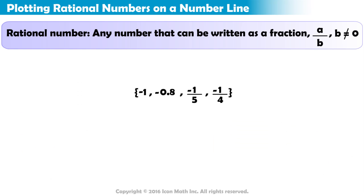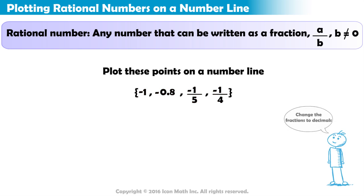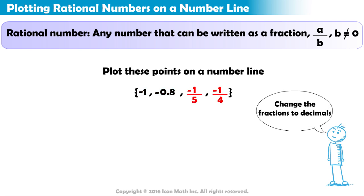Take a look at this set of rational numbers. In order to plot these points on a number line, it is helpful to write them in a common form. Let's change the fractions to decimals. Negative 1 fifth is equal to negative 2 tenths. Negative 1 fourth is equal to negative 25 hundredths.